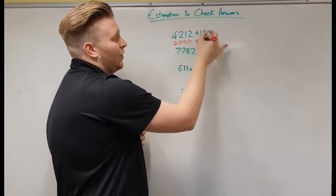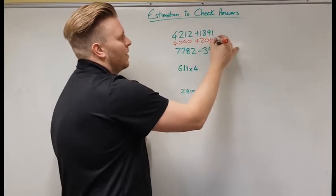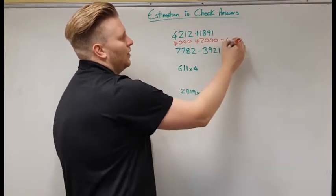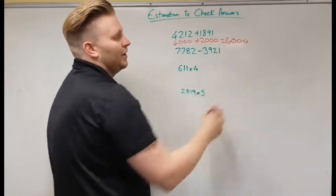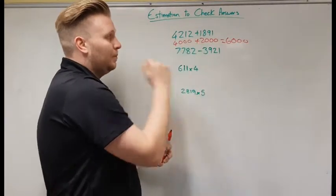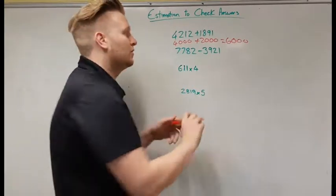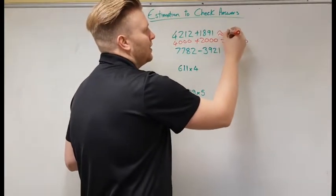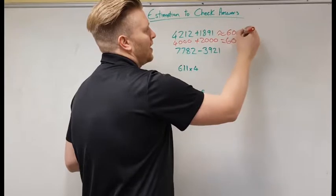And this one I'm going to say 2,000. So I'm going to say that would equal 6,000. It's an easy sum for me to do. That took me a couple of seconds and I now know that my answer should be around 6,000. So approximately equals 6,000.